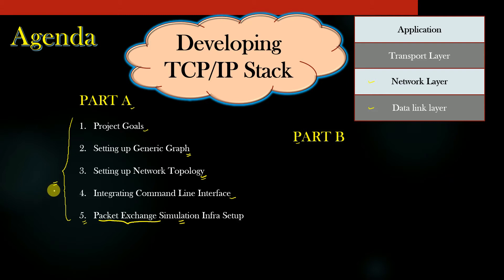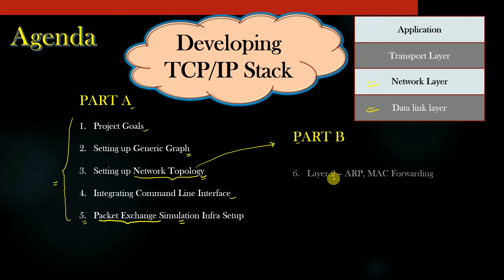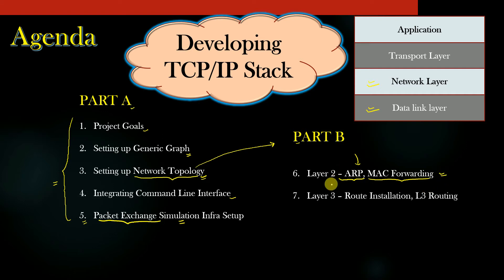Once we accomplish all five steps, we will essentially have a network topology that can be used to implement any kind of networking-related problem or solution and demonstrate network concepts. In Part B, we will use this network topology to implement complete L2 routing as well as L3 routing. We will start with implementing the ARP protocol and see how MAC forwarding is implemented — you will be writing the entire code for these functionalities.